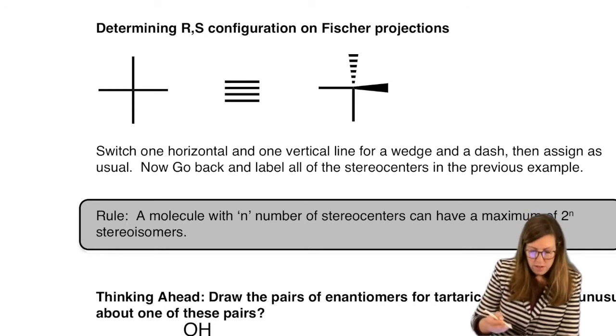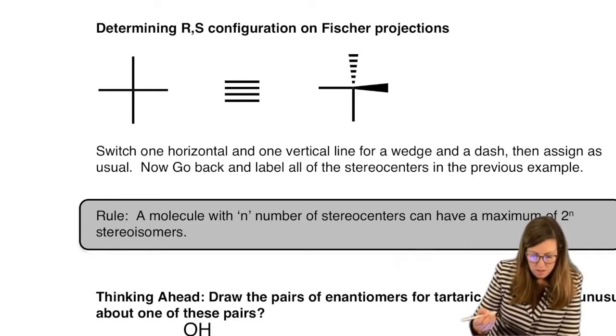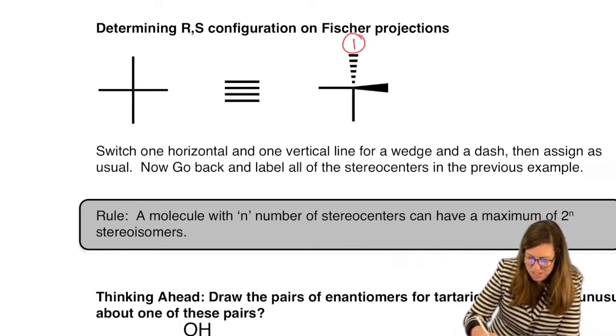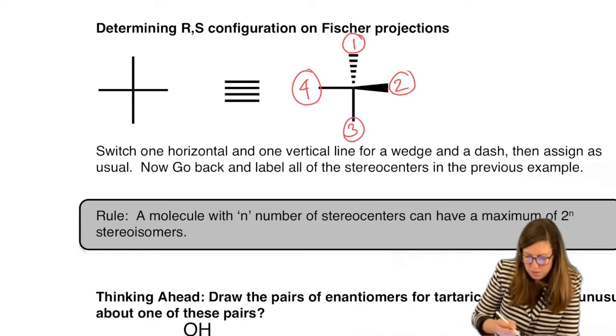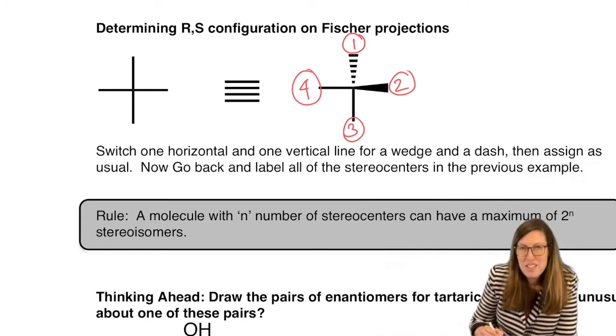Then you assign your usual priorities, so let's just do this as an example. Let's make it hard so that you can have that plan ready in place for a hard scenario. So let's say our priority ended up being 1, 2, 3, 4. Uh-oh, that's why I said make it hard. 4 is not on a dash for us. We have to rotate.